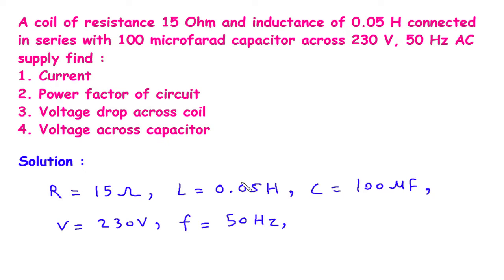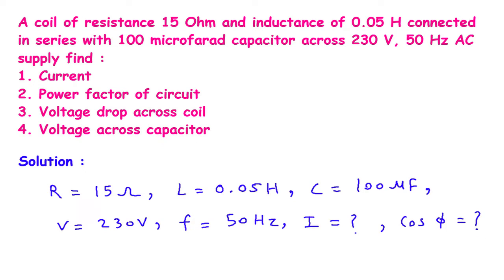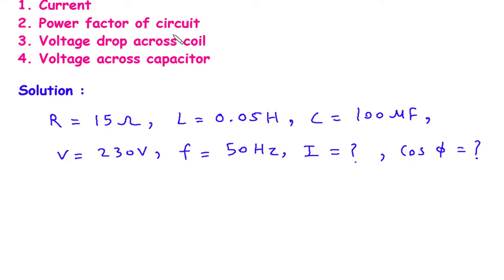Now, what we have to find: we have to find current I, then power factor of the circuit — that is cos phi — and then voltage drop across the coil.